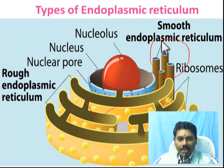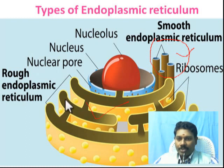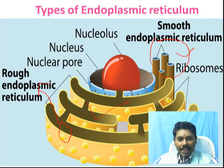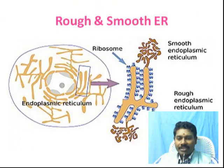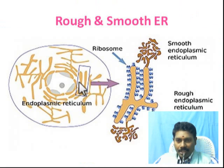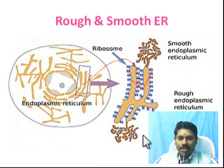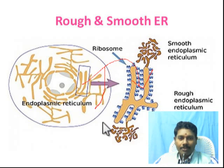Smooth endoplasmic reticulum is mostly in tubule form. Rough endoplasmic reticulum is so named because of the presence of ribosomes. The nuclear membrane is immediately adjacent to rough endoplasmic reticulum. Towards the cell plasma membrane you find smooth endoplasmic reticulum.